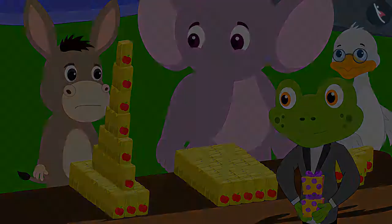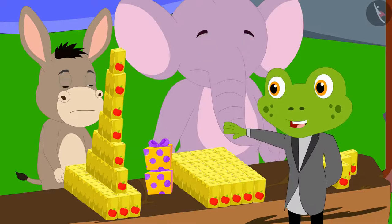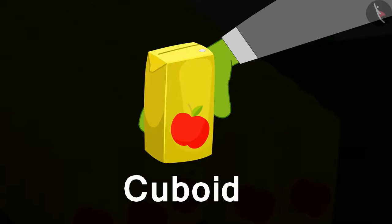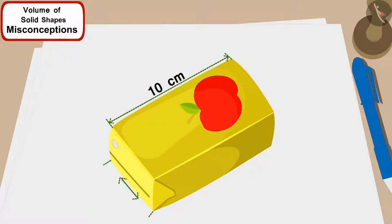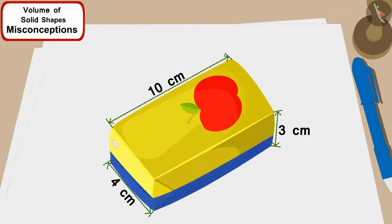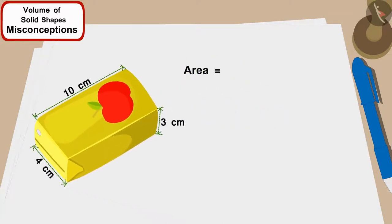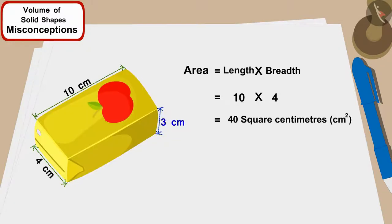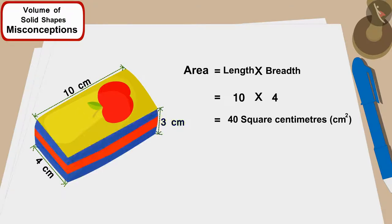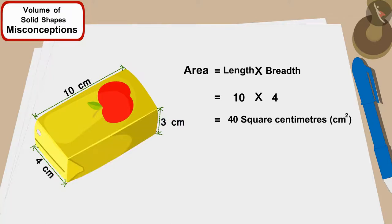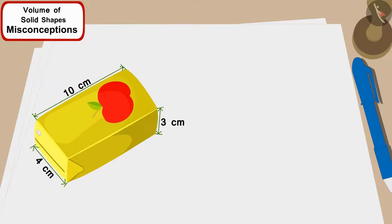Taru said: 'Let me explain to you both. Each juice box is cuboid-shaped with a length of 10 centimeters, width of 4 centimeters, and height of 3 centimeters. That means the bottom layer of each juice box — length times width — is 10 × 4 = 40 square centimeters. Because the height of the box is 3 centimeters, there will be three such layers. So the volume of one juice box will be 40 × 3 = 120 centimeters cubed.'